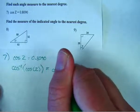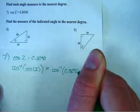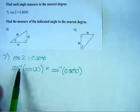And if I do something to one side of an equation, I gosh darn better do it to the other. So I also need to take the inverse cosine of 0.8090.